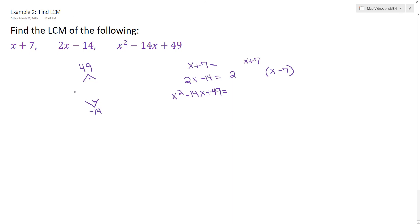So what two numbers multiply to give you 49, but add to negative 14? The answer would be negative 7 and negative 7. And so the factorization would be x minus 7 and x minus 7, or you could list that as x minus 7 squared.